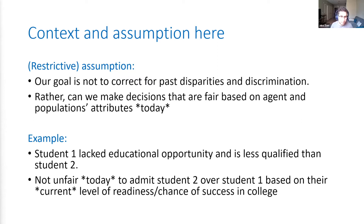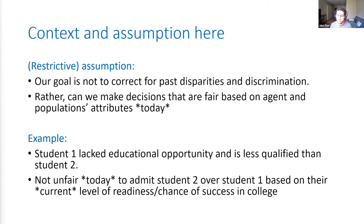An example of what I mean, and I insist this is restrictive: imagine you have two students, and one student has faced significant disparities and did not have the same educational opportunities as the other. So student one today is maybe not as qualified as student two. It's not unfair for a college to admit student two over student one based on their current level of readiness and chance of success in college right now.